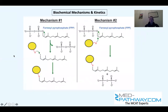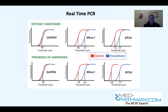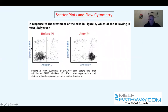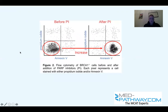We do biochemical mechanisms — this is SN1 versus SN2, classical MCAT stuff. We do real-time PCR and show you how to actually read these complex images. We break it down for you. We're going to show you scatter plots, very common in flow cytometry. Not a lot of people have seen scatter plots, but we're going to show you how to read them. We read many different types of data.